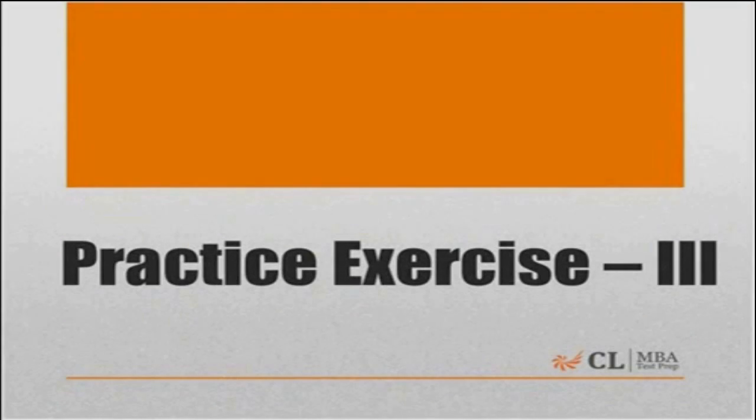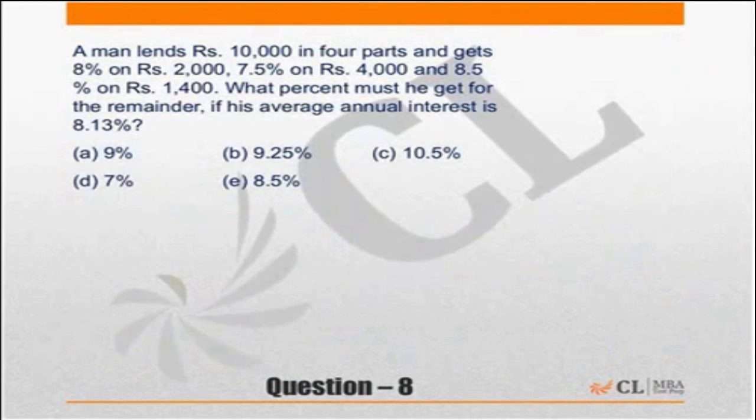The first exercise: a man lends Rs. 10,000 in four parts and gets 8% on Rs. 2,000, 7.5% on Rs. 4,000, and 8.5% on Rs. 1,400.